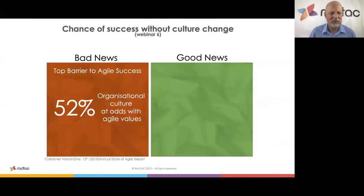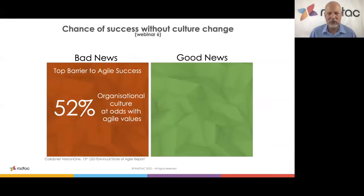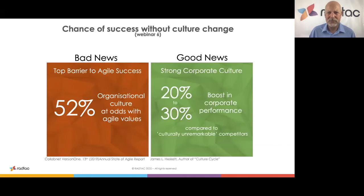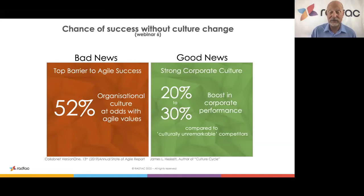The top barrier to agile success is organizational culture being at odds with agile values — from the 2019 State of Agile Report. Do transformations in vertical slices so you bite off a realistic, meaningful, valuable chunk of change focused on the end customer. The good news is that a strong corporate culture based around agile gives a very significant boost to corporate performance — this is from James Heskett's book The Culture Cycle.